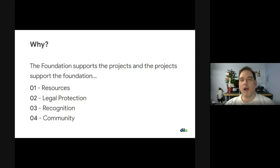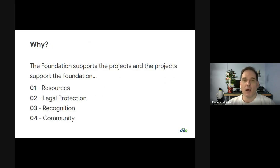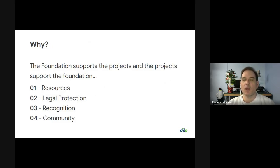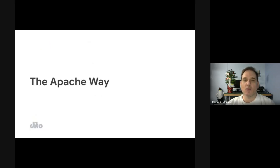So why do we do it? The key thing is we want to make sure that projects have what they need. We want to make sure their communities have the resources they need, the legal protection they need, and that they get recognition. By joining together with other like-minded people and projects, newer projects can get attention from older, more established ones. And finally, really just build a good, vibrant community that can make code — and that's something really apparent when you talk about the Apache Way.